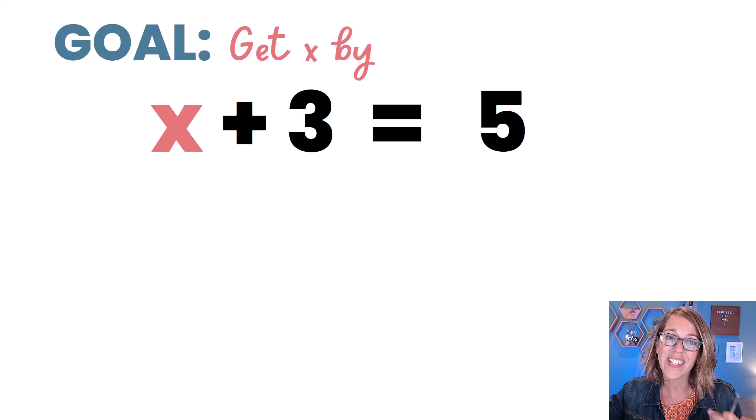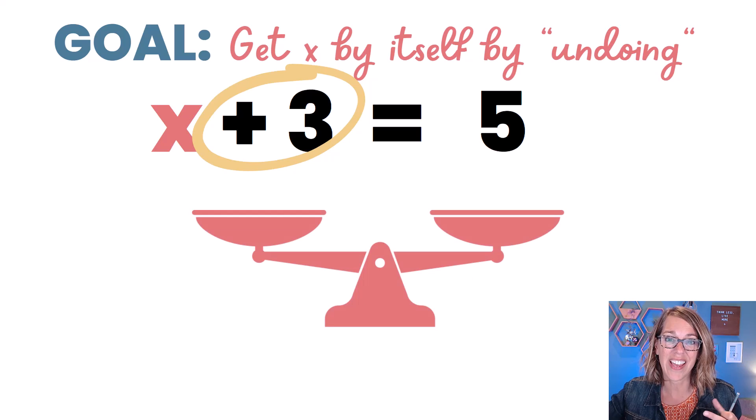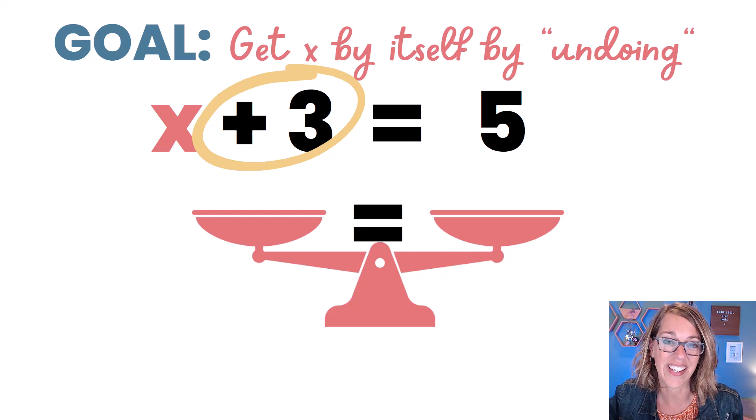Now for this one, our goal is to get x by itself by undoing whatever happened to x. And in this case, the x had a 3 added to it. Now I'm going to think of this equation as being on a scale with that equal sign right in the middle.